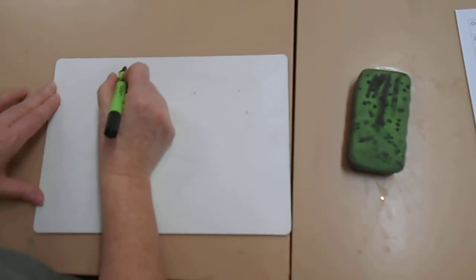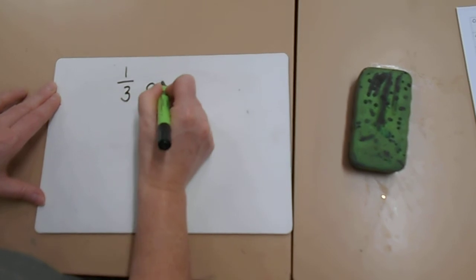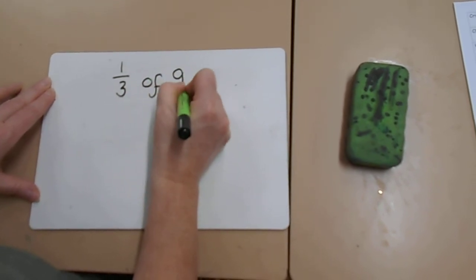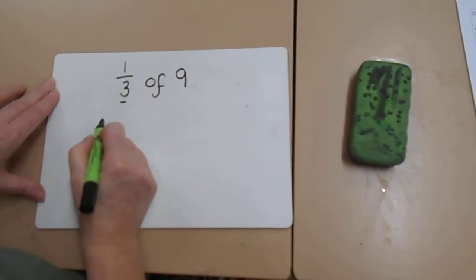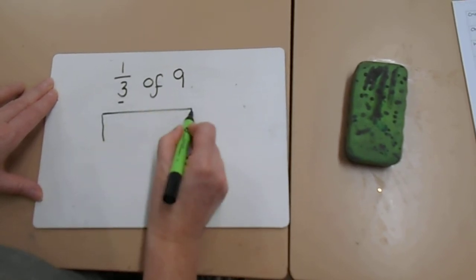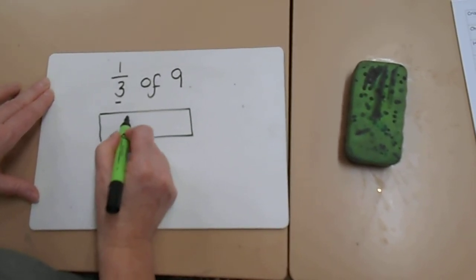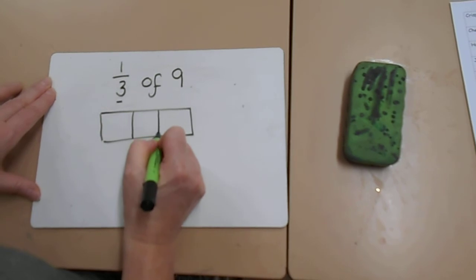So now if we look at thirds. So a third of 9. Again, look at the bottom number. The bottom number tells us how many to split our bar into. So this time we are splitting our bar into 3.